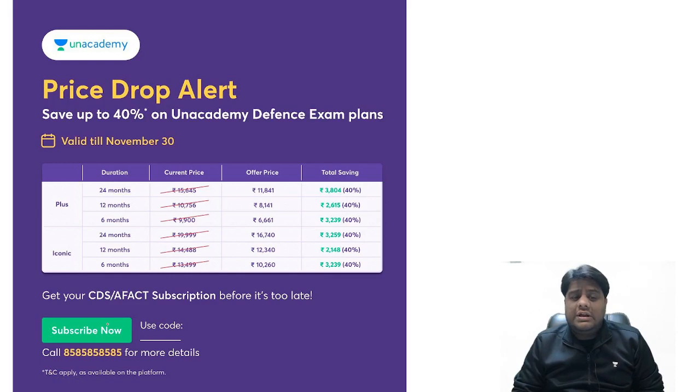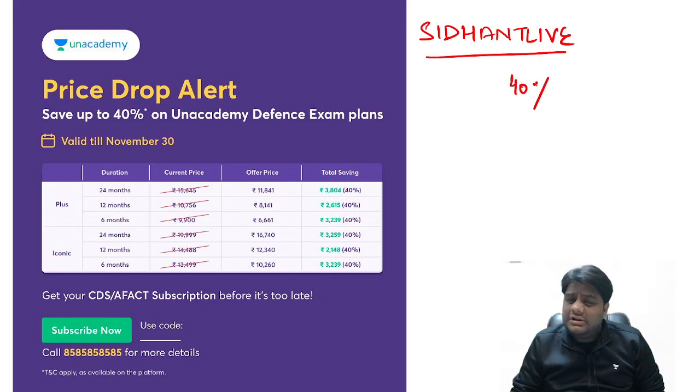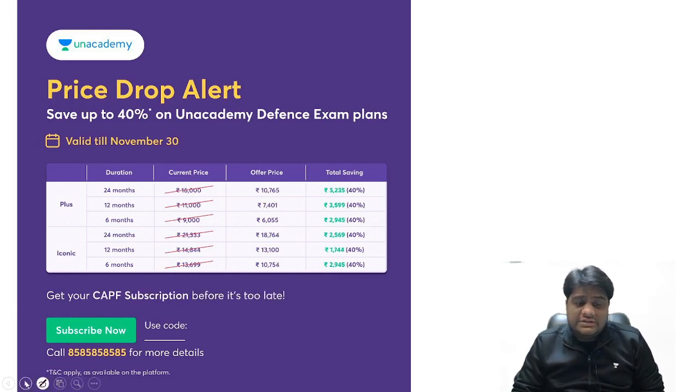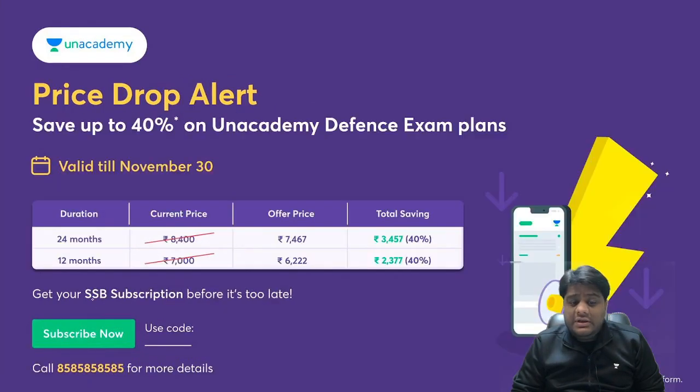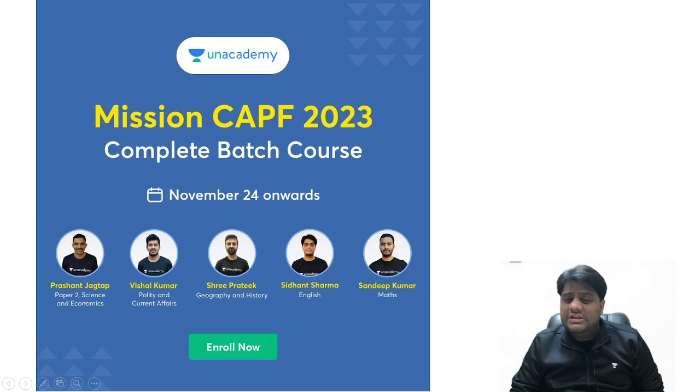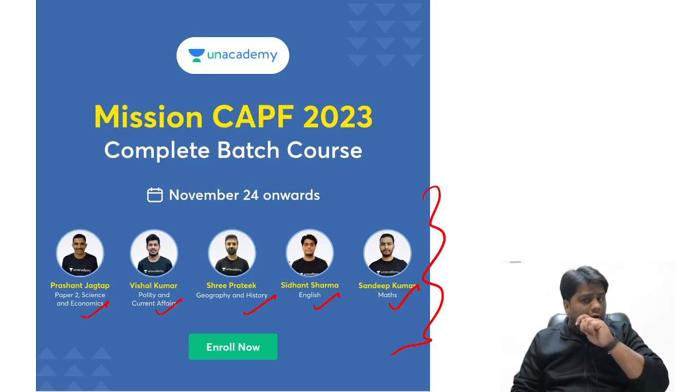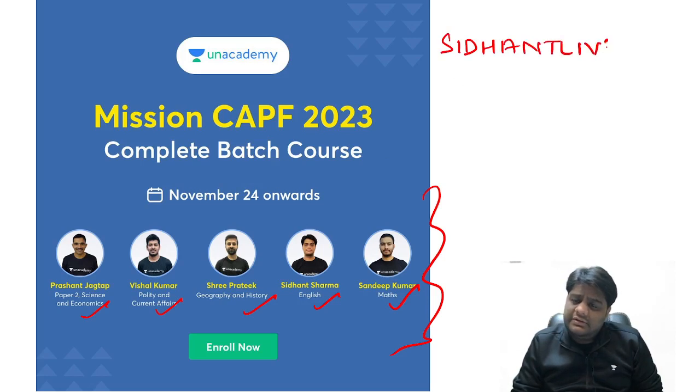Students, price drop alert. You can use this code, Siddhant Live, and avail 40% discount. This is your offer on CDS/AFCAT, CAPF, SSB, CAPF 2023 - a new batch course has been launched. Everyone is there at your service, guys. You can definitely have a look at the cost structure.